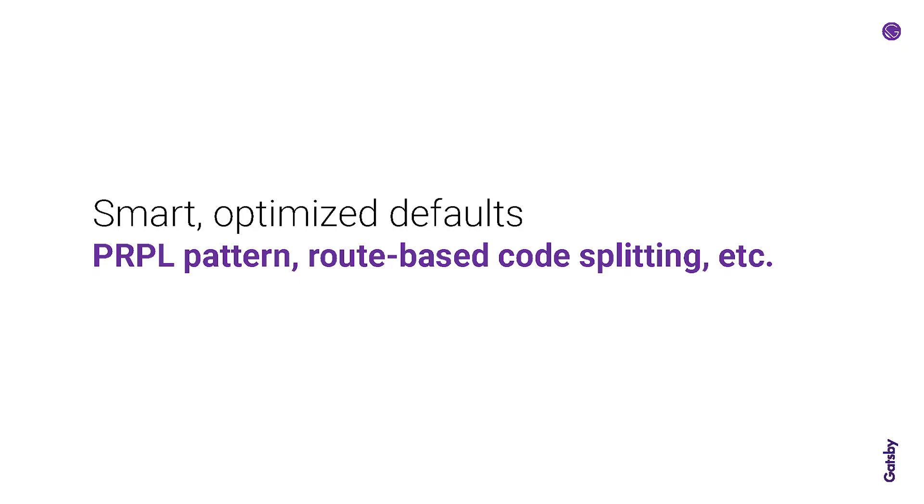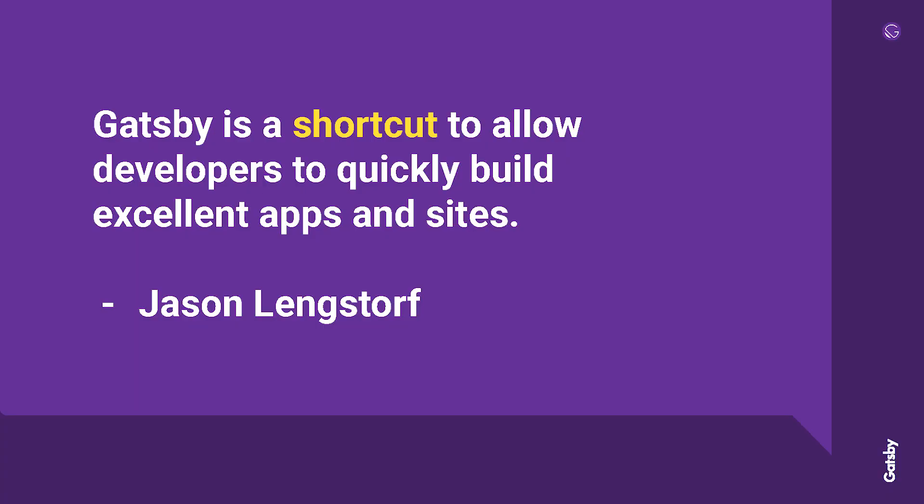Smart optimized defaults: things like the purple pattern, route-based code splitting, Gatsby Image, Gatsby Link — all of these are internalized so that you can build really fast apps just by using Gatsby, without necessarily having to know all of these excellent techniques. Jason said it really well — Gatsby is a shortcut to allow developers to quickly build excellent apps and sites. You don't have to know all the great performance optimizations; just use Gatsby.